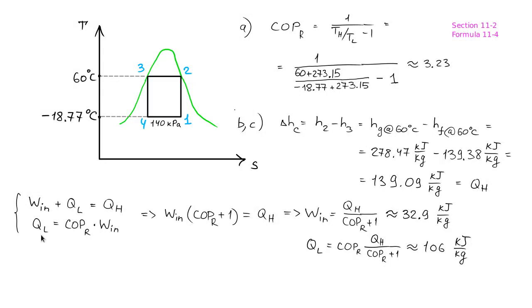By definition of the coefficient of performance, the coefficient of performance is the ratio of QL to W in where QL is the amount of thermal energy absorbed from the source and W in is the amount of work performed.